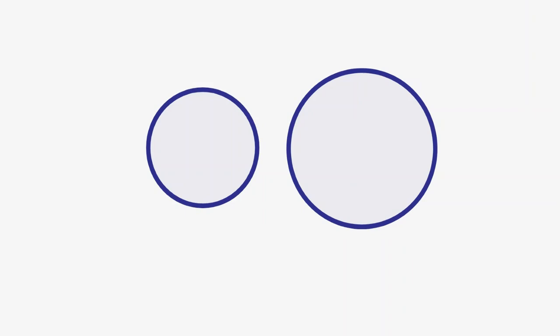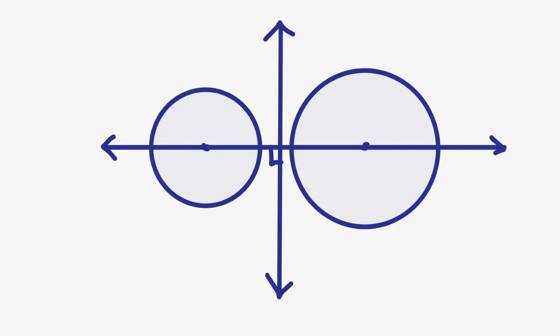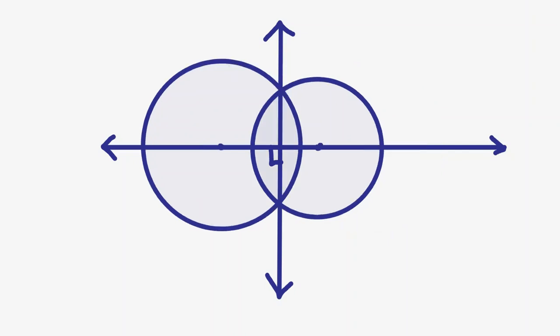The radical axis of two circles is the set of points such that any point in the set has the same power with respect to the two circles. We will prove that the radical axis is actually a line perpendicular to the line through the centers of the circles, and if the two circles happen to intersect, this line goes through their intersection points.